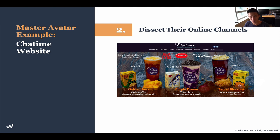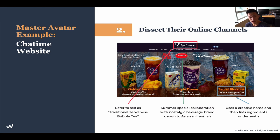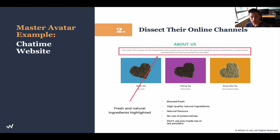What I've seen so far is that they refer to themselves as a traditional Taiwanese bubble tea brand. They have summer collaborations with nostalgic beverage brands known to Asian millennials — like Vitasoy, a big brand known throughout Asia. They use creative names and list out ingredients underneath, like 'Secret Blossom,' which adds a bit of mystique but then clarifies the ingredients so they don't throw customers off. On their About Us page, they highlight fresh and natural ingredients, telling me their customer avatar is more health-conscious — going for natural ingredients rather than powdered.